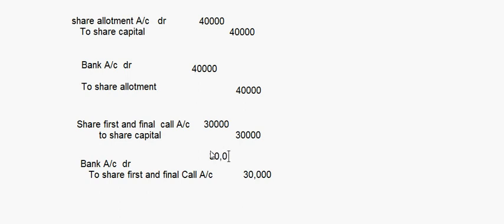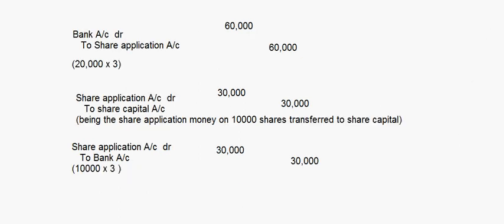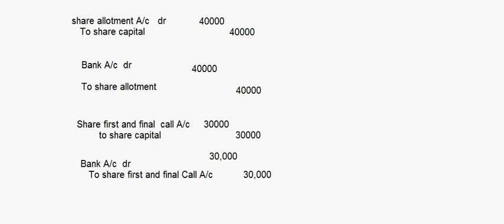The key entries to learn here are how much is to be transferred to share capital and how much is to be refunded to the applicant when the company decides to reject excess applications. If you are also asked to prepare ledger accounts, you need to prepare the Share Application Account, Share Allotment Account, Share Capital Account, Share First and Final Call Account, and Bank Account. That concludes this session on the accounting treatment for rejection of excess applications.